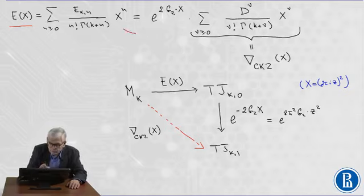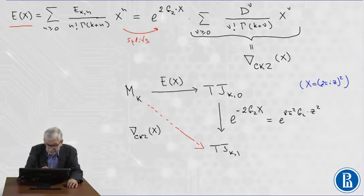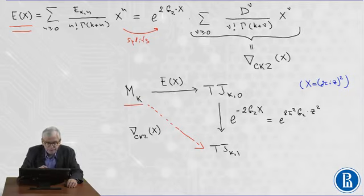This result I can present in the following diagram. We start with the space of the modular forms of weight K with respect to the full modular group. If we apply the operator E, we get a power series of modular forms of weight K plus 2N.